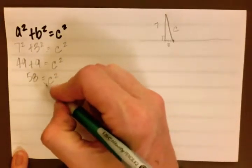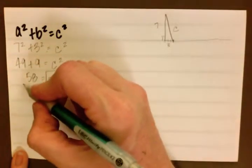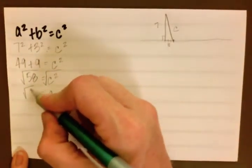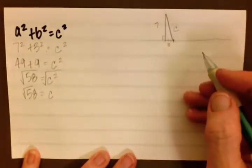Remember that the way we get rid of a c squared in any equation, because we are solving just for c not c squared, is that we square root. And the square root of c squared is c, but whatever we do to one side of the equation we must do to the other. So c equals the square root of 58.